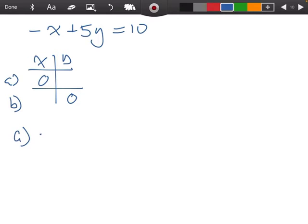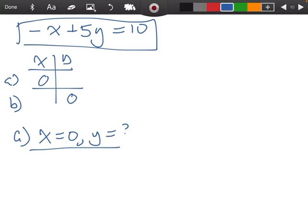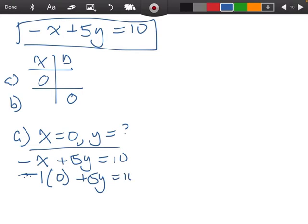In part A, we know that x is 0, and it's our job to solve for y. I'm going to come back to this equation, and everywhere I have the letter x, I'm going to plug in the number 0. If it's a negative x, I can think about it as a negative 1x, and I'm plugging in x equals 0, plus 5y equals 10.